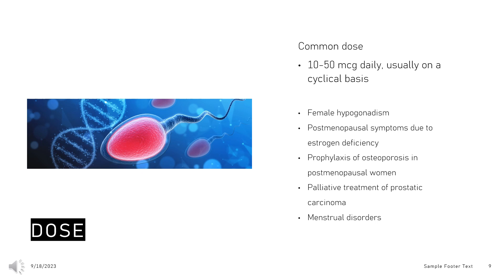Postmenopausal symptoms due to estrogen deficiency, Adult: 10–50 mcg daily for 21 days, repeated after a 7-day tablet-free period, to be given with a progestogen for 12–14 days per cycle, in women with an intact uterus or endometriosis when endometrial foci may be present despite hysterectomy. Not recommended to add a progestogen in women without a uterus who did not have endometriosis diagnosed.